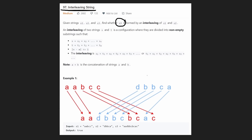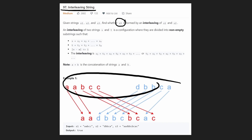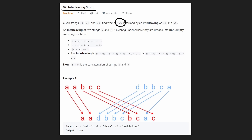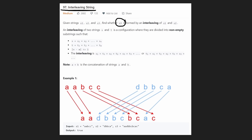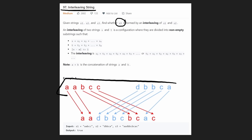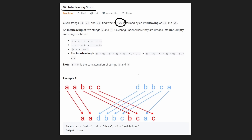The first thing you might notice is that if we're taking these strings and splitting them, the total number of characters has to match the total number of characters in string three. In this case it does — we have 10 characters in the output, and each of these strings is five, so five plus five equals 10.